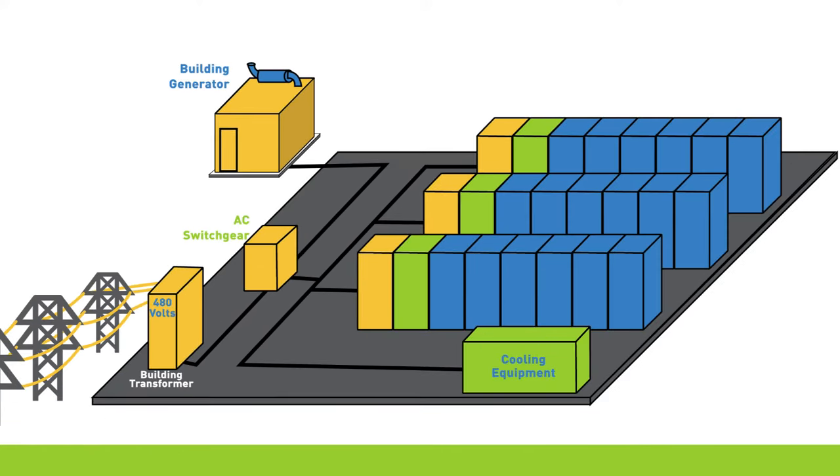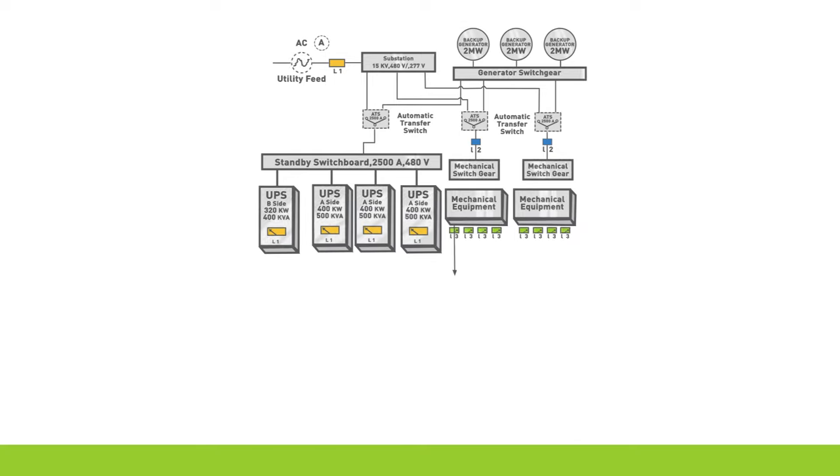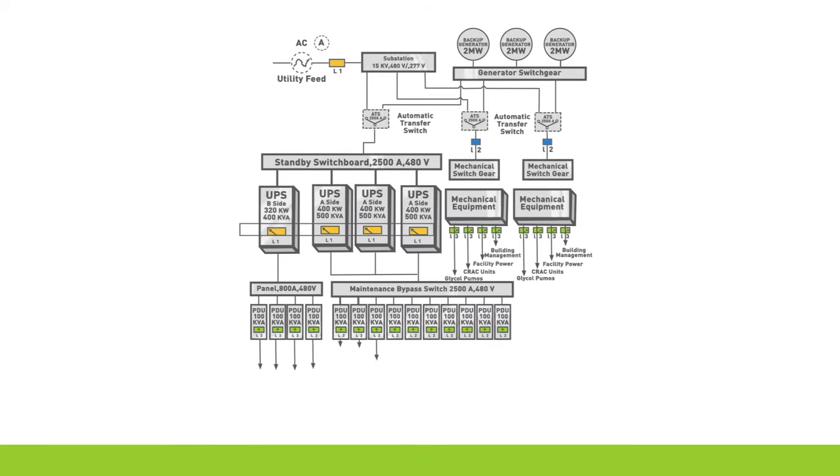Many power disruptions can be under 3 seconds, so a data center operator will not want the generators turning on needlessly. Also, it takes a little bit of time for the generators to completely power up and reach a stable level of power output. To bridge the gap between when the utility power stops to when the generators are delivering full power, we have a standby power source called an uninterruptible power supply, which is known as UPS.